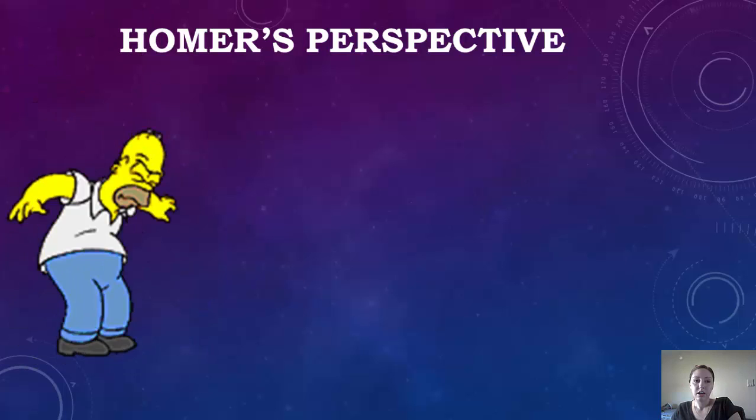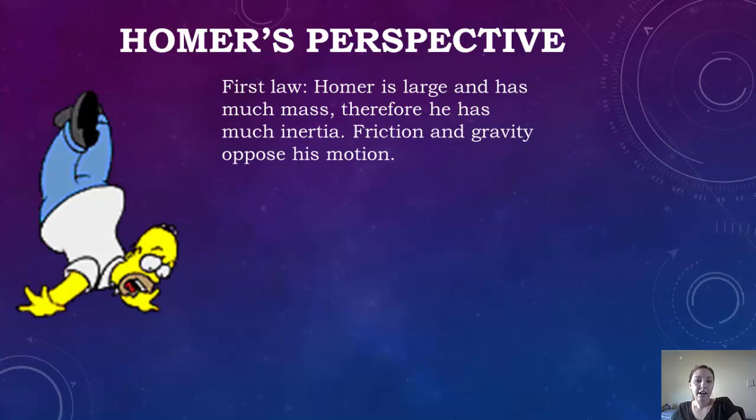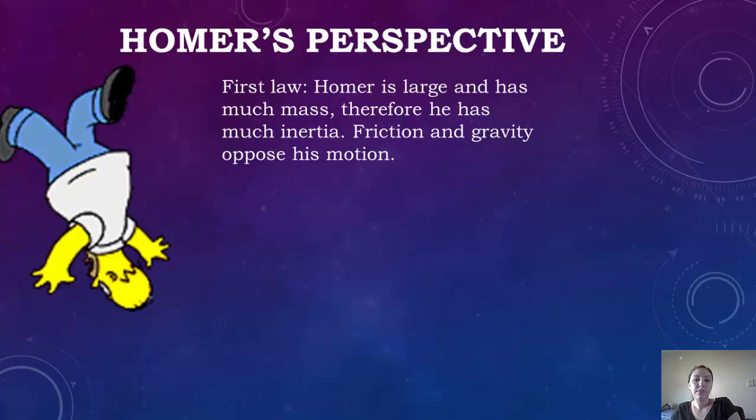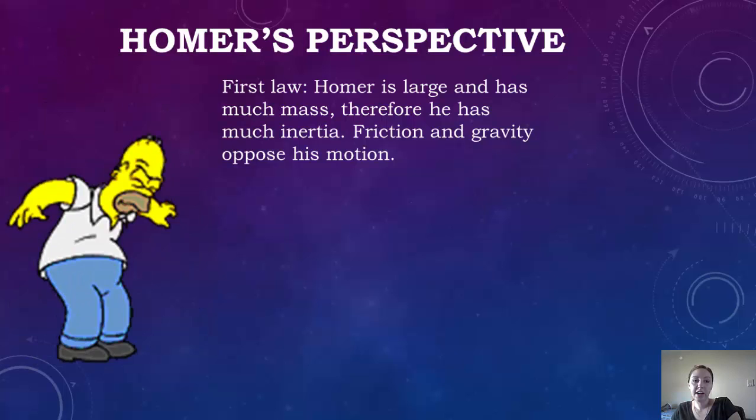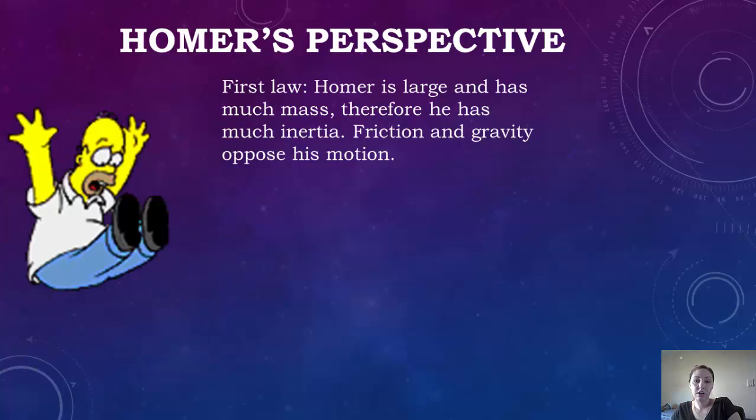And just for fun, let's look at Newton's three laws from Homer Simpson's perspective. So Homer Simpson, he's large and has a greater mass, therefore he has greater inertia. So friction and gravity oppose his motion. So it's going to be harder for him to change directions, or stop, or anything that has to do with motion since he has a larger mass.